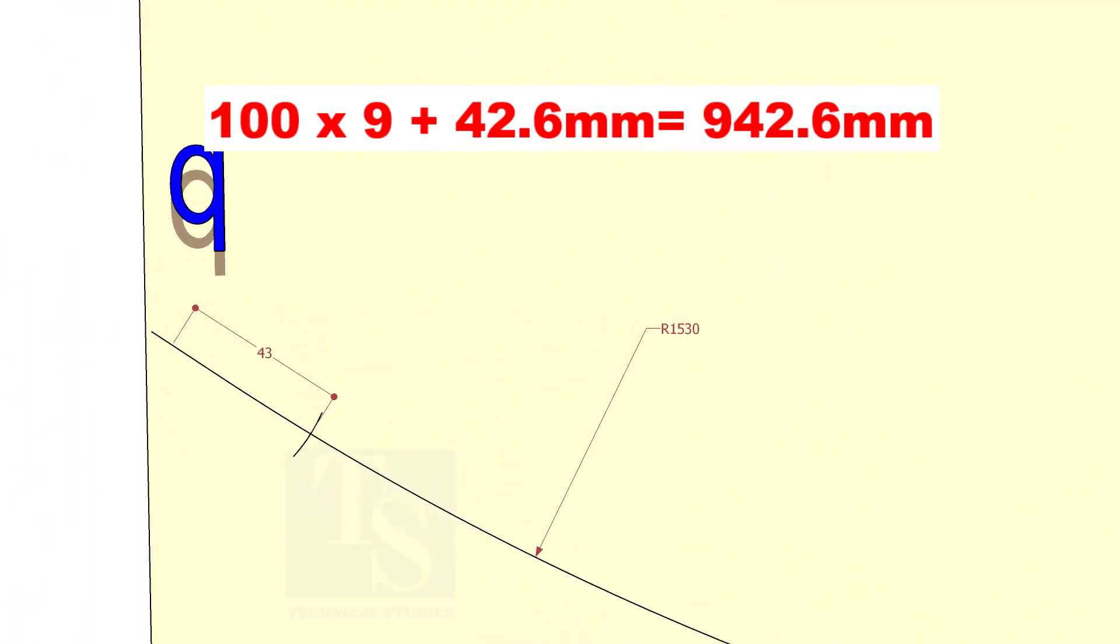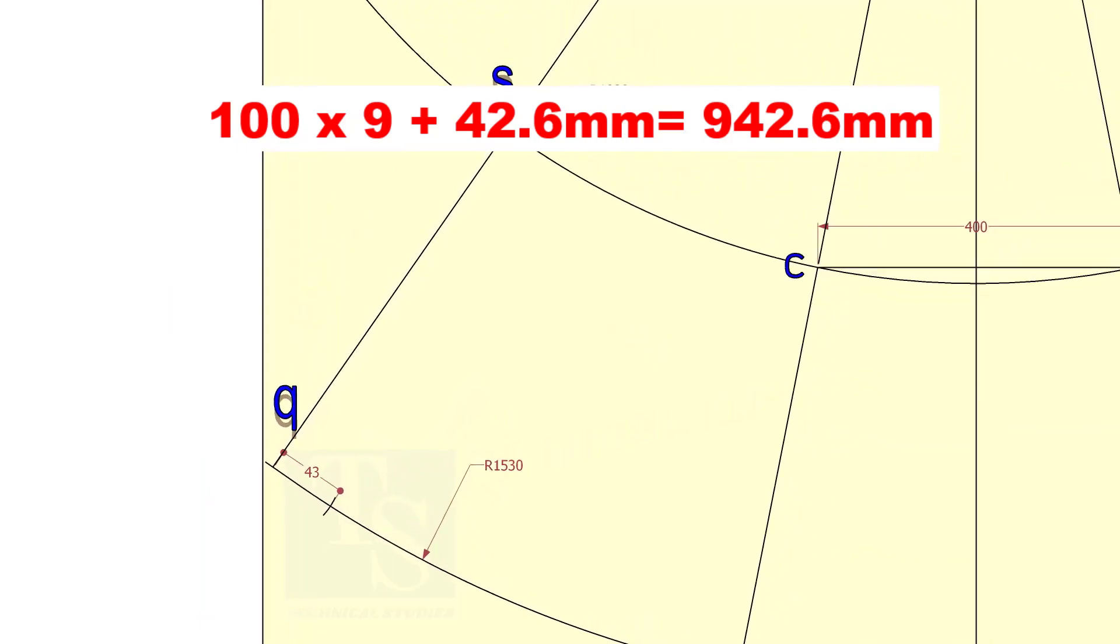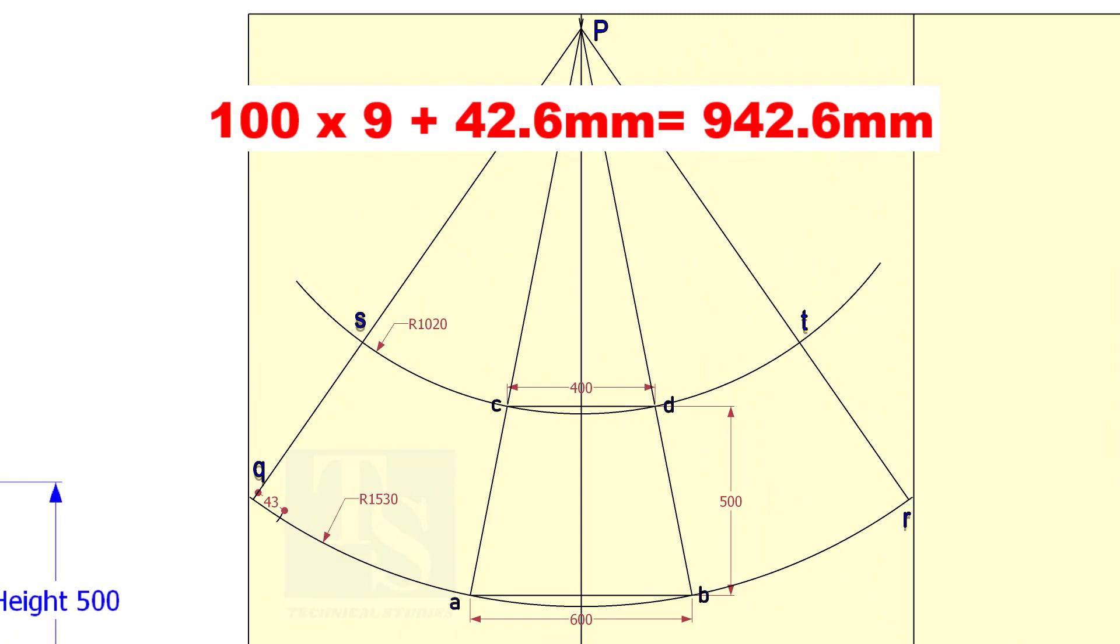Add the 42.6 millimeters at the end of 900 millimeters on both sides of the center line. Draw lines connecting this point to P.